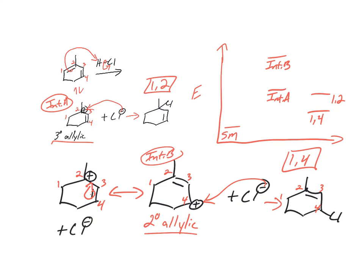So the 1,4 comes from which intermediate? The B, right? So higher energy. We'll get there. Higher energy intermediate. So it's going to take more energy to get there. Both to get to the more unstable intermediate, but then to get to the more stable product.